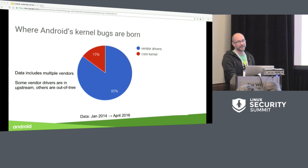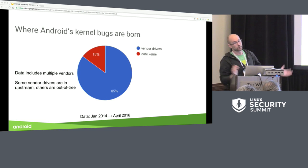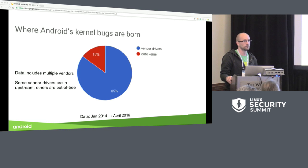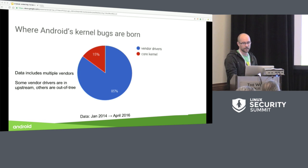Android does, in fact, inherit bugs from the upstream kernel, but our data shows that most of Android's kernel security vulnerabilities live in device drivers. Some of those device drivers do come from the upstream kernel — for example, a Wi-Fi driver — but many of them are introduced by SOCs as well as other manufacturers.